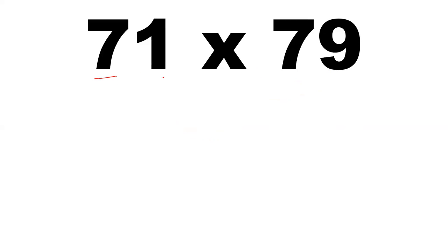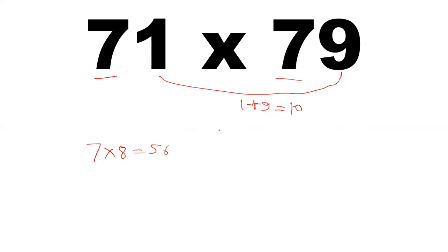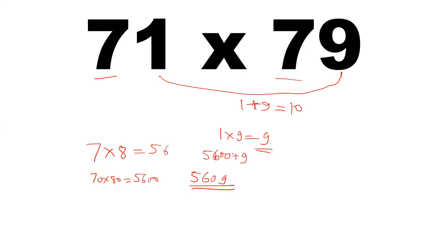This next example is interesting: 71 and 79. The tens digits are same and 1 plus 9 is 10, so the condition is satisfied. Take 7 and multiply by the next number 8: 7 into 8 is 56. Now multiply the unit digits 1 and 9: that is 9. But don't write 569 — write 5609, because 7 into 8 is basically 70 into 80, which is 5600. We are adding 9 to get 5600 plus 9 equals 5609. When the unit digit product is only one digit, place a zero before it.